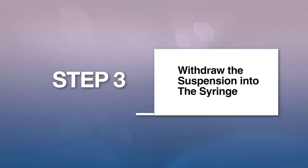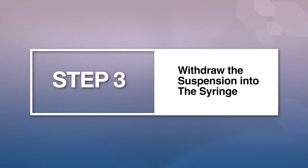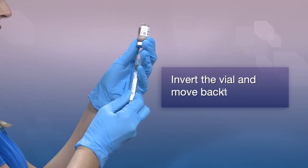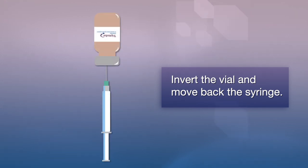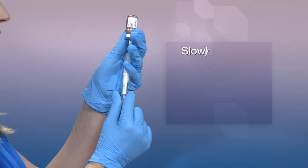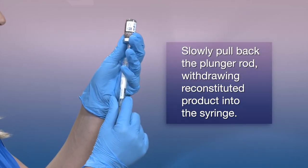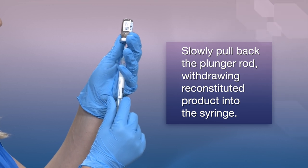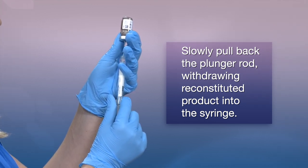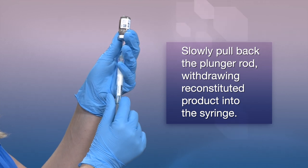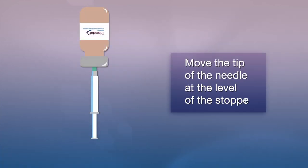Step 3: Withdraw the suspension into the syringe. Invert the vial and move back the syringe in order to position the end of the 21-gauge needle near the level of the stopper, making sure the needle lumen is still completely in the vial. Next, pull back the plunger rod slowly to withdraw the reconstituted product into the syringe, withdrawing as much of the reconstituted product as possible. Move the tip of the needle at the level of the stopper to be able to withdraw a maximum amount of suspension.